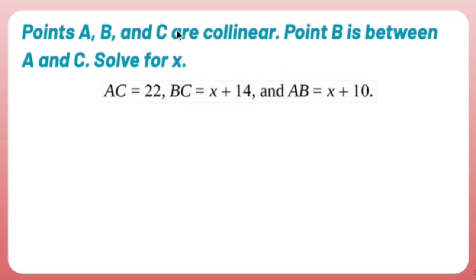Points A, B, and C are collinear. That means they're all points that live on the same line. So let's draw a fake line just for funsies. B is in between A and C, another fake line with points now. Solve for X. All right. What do I know? I know AC is 22. So I know this whole thing. Oh my gosh, it's 22. That looks great. 22, the Taylor Swift special. I know that BC is X plus 14. BC, of course, standing for before Christ. And AB is X plus 10.